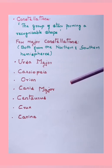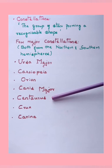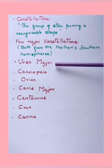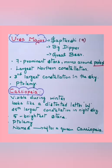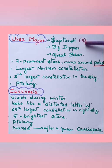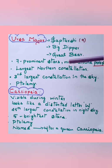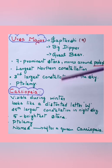Here are some major constellations from both the northern and southern hemispheres: Ursa Major, Cassiopeia, Orion, Canis Major, Centaurus, Crux, and Carina. Ursa Major is also called Saptarshi Mandala — 'sapta' means seven. It is also called Big Dipper or Great Bear. It contains seven prominent stars, moves around the pole star, is the largest northern constellation, the third largest in the sky, and was found by Ptolemy.